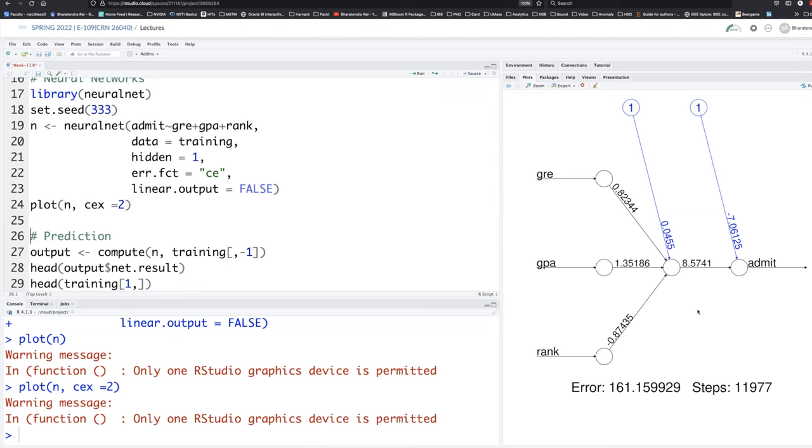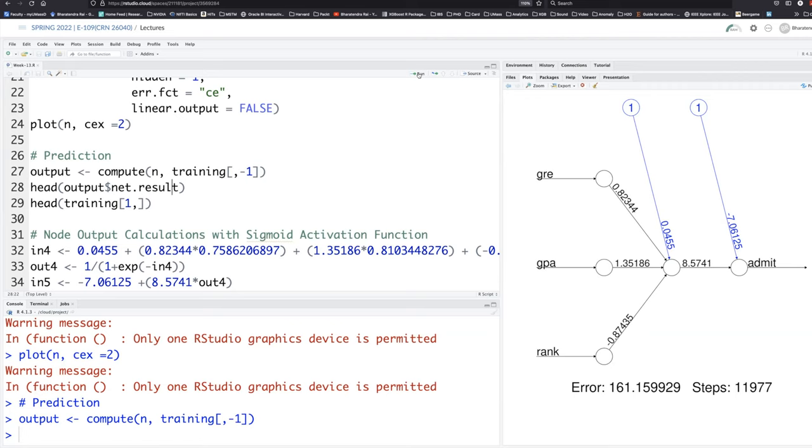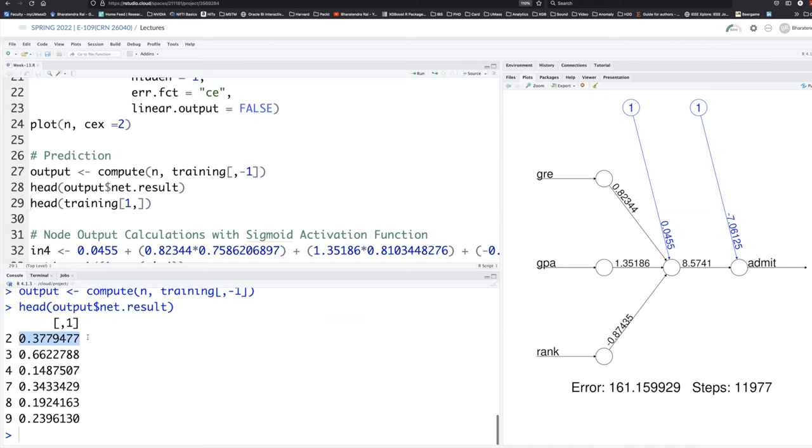For prediction, we don't use predict function. We use compute. And I'm going to use this model that is sitting in N that we created. And we'll use training data, but remove first column. Because that's the response. So we don't want to supply admit values. And then find the output. So that's the idea. So if you want to look at output dollar net.result, first few values, this is what you get. So these are first few predictions. The first applicant in the training data is applicant number two. And the prediction is 0.37. So about 37% chance of getting admitted. Similarly, third applicant has about 66% chance of getting admitted.